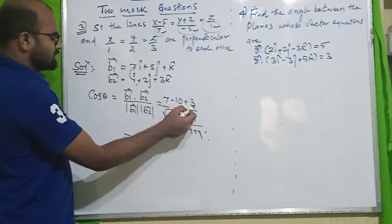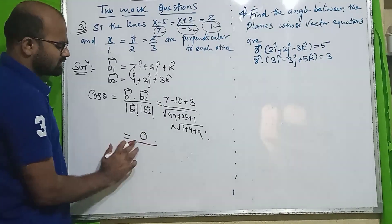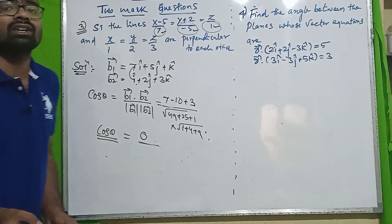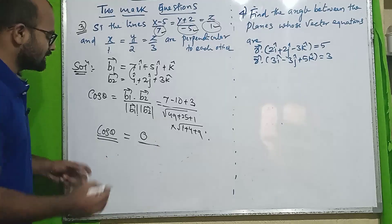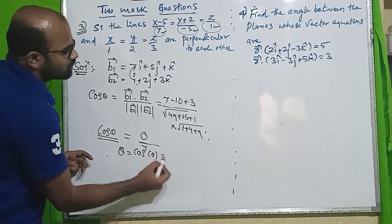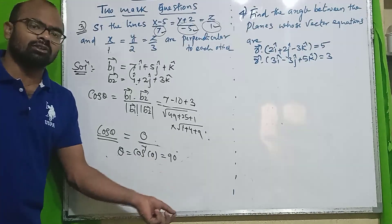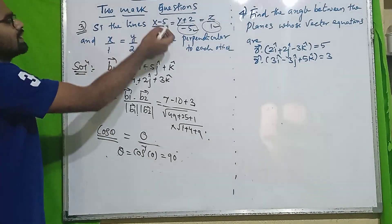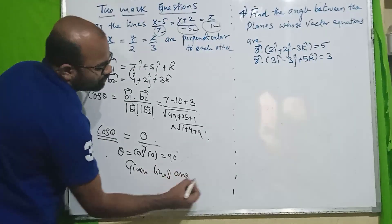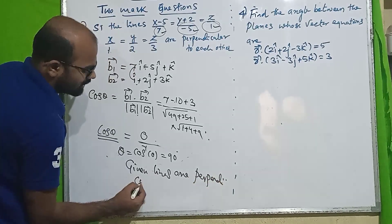7 plus 3 = 10, 10 minus 10 = 0. So the numerator is 0. Zero divided by anything is 0, so cos θ = 0. Therefore θ = cos⁻¹(0) = 90°. Since θ = 90°, the given lines are perpendicular to each other.